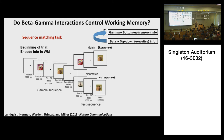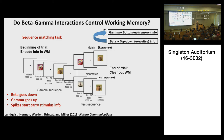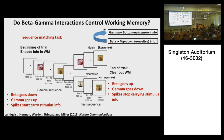Starting with the simple finding: at the beginning of the trial, the monkey encodes information in working memory, and at the end of the trial it clears information out. Beta goes down at the beginning of the trial, gamma goes up, and spikes start carrying stimulus information — consistent with the idea that relaxing beta turns on gamma, which allows encoding information in working memory. At the end of the trial, the opposite happens: beta goes up, gamma goes down, and spikes stop carrying stimulus information.